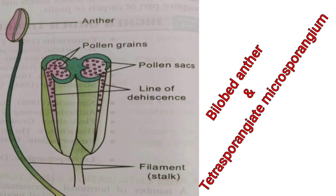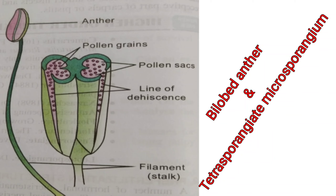So here we have the key terms: a bilobed anther means the anther has two lobes. Within a bilobed anther, four microsporangia or pollen sacs are formed.